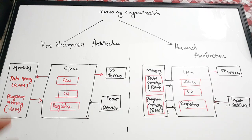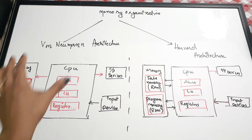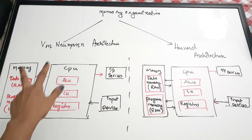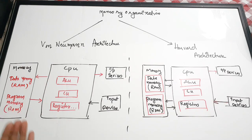Before looking into the memory organization of 8051, there are generally two types of memory organization architectures that processors and controllers follow: Von Neumann architecture or Harvard architecture. A lot of theory questions can come from this memory organization area, so please note down these important points.